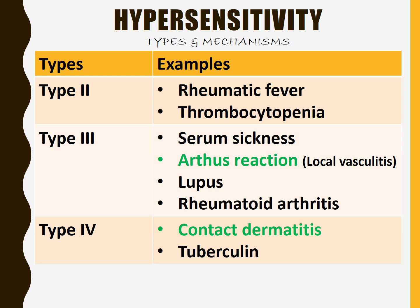Summary of hypersensitivity reactions: Type 1 examples — anaphylaxis and atopic dermatitis. Type 3 example — Arthus reaction. Type 4 example — contact dermatitis.